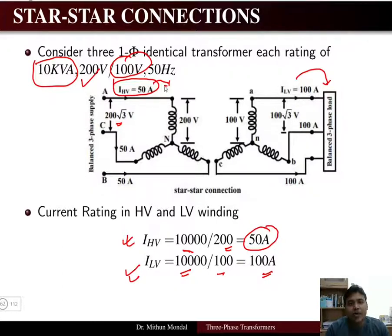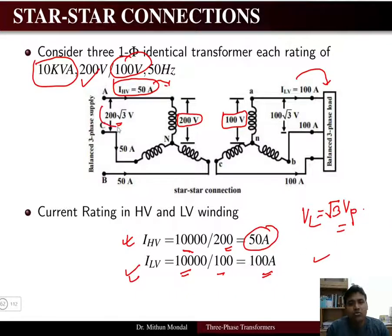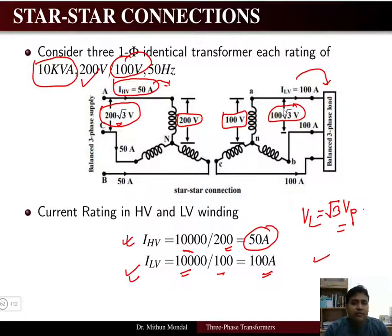Since it is a three single-phase transformer bank, the phase voltage on the primary side is 200 V and on the secondary side it is 100 V per phase. The line voltage is root-3 times the phase voltage, so on the primary side the line voltage is 200√3 V, and on the secondary side it is 100√3 V.